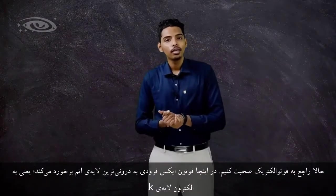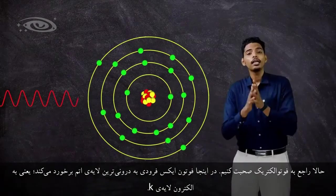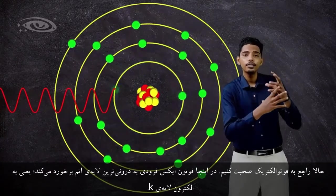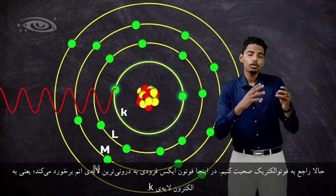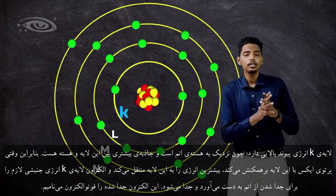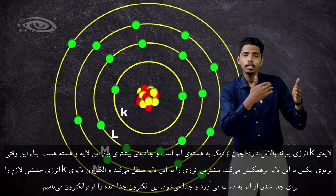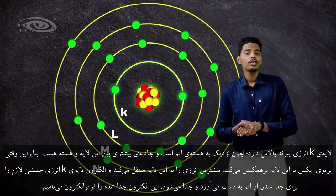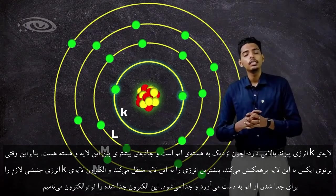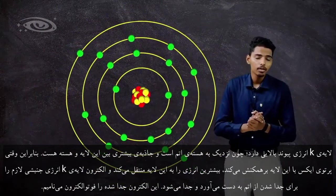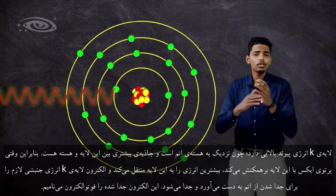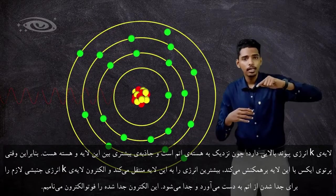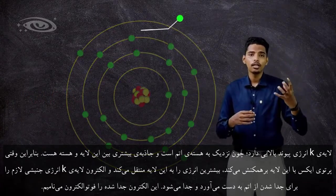Now let's look at the photoelectric effect, or photoelectric absorption. Here the incident x-ray photon interacts with the innermost shell — specifically the K-shell electron of the atom. The K-shell has more binding energy because it is present next to the nucleus, giving it stronger attraction to the nucleus. The incident x-ray photon transfers most of its energy to the K-shell electron, which gains kinetic energy and gets ionized from the atom. We call this ionized electron the photoelectron.